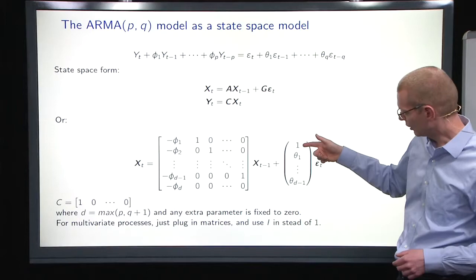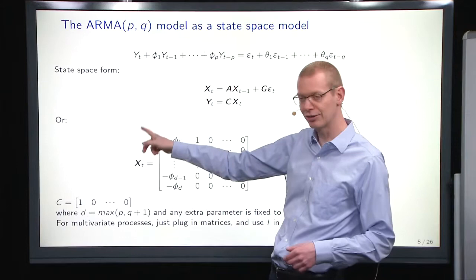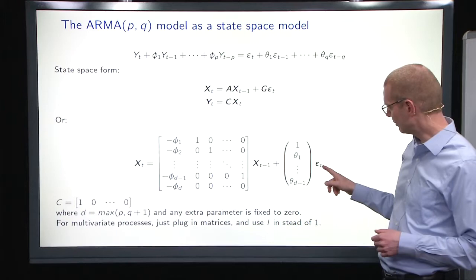Then we have, for the moving average part, we start with a 1, because we want the first element of the X state here to represent time t, and then,